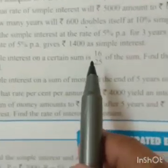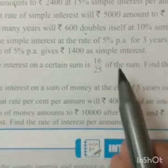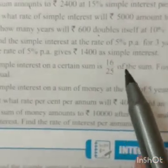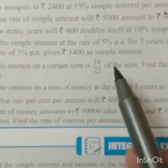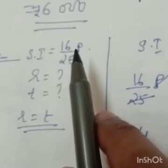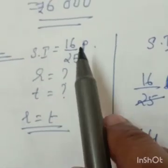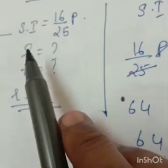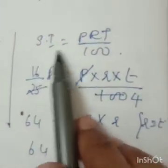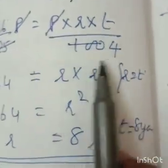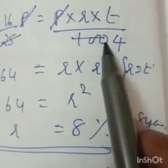Question number 12: simple interest on a certain sum is 16/25 of the sum — whatever the sum, SI = (16/25)P. Find the rate and time, given that rate and time are numerically equal. Using formula SI = PRT/100, substitute SI = (16/25)P. Since R = T, replace T with R.